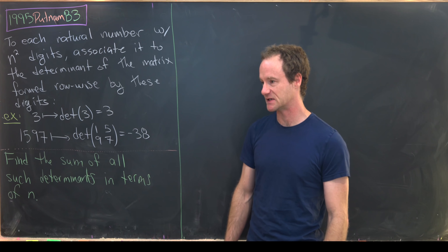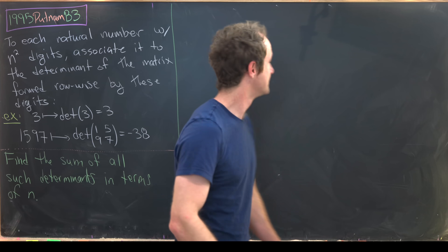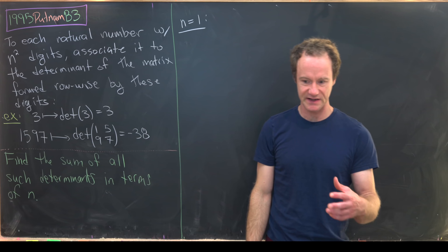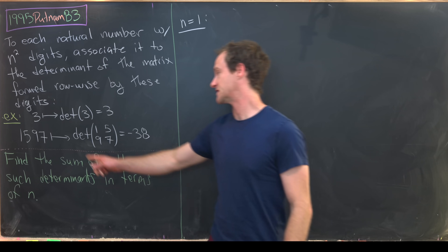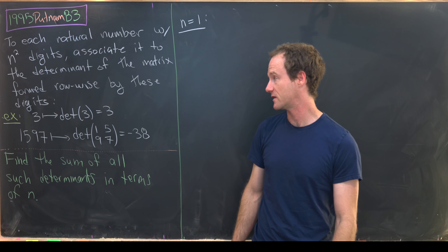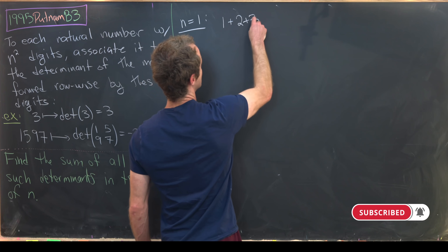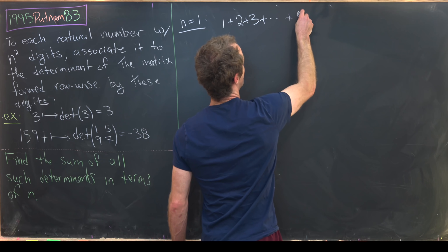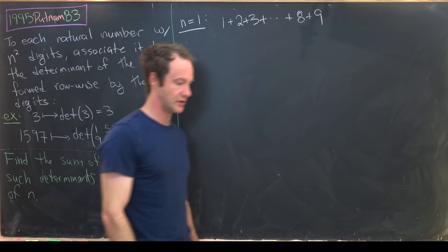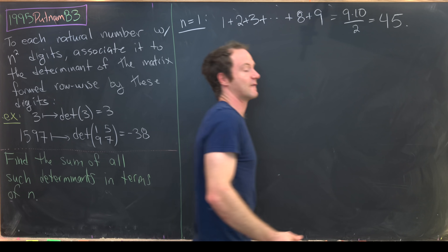We're going to do a couple of cases to get started, and that'll guide us toward what the general solution should look like. For n=1, we need to sum over all one-digit numbers. Since a one-digit number turns into itself under this process, we're just finding the sum 1 to 9. That's a well-known triangular number: 9×10/2 = 45.